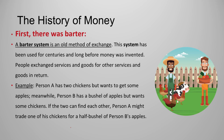Before coins existed, people exchanged goods and services directly. If person A has chickens and person B produces apples, the only way person B can get chickens is by giving up some apples. If he doesn't have apples but has oranges, he can trade oranges for chicken. Similarly, if one person produces clothes and another produces shoes, they might exchange a couple of shirts for one pair of shoes. That's how the barter system works.